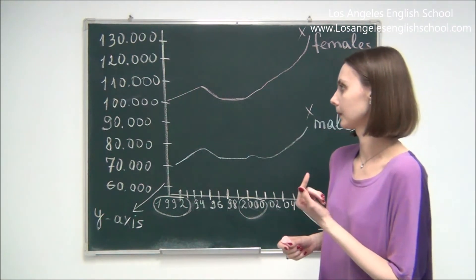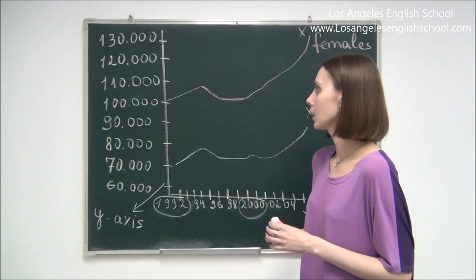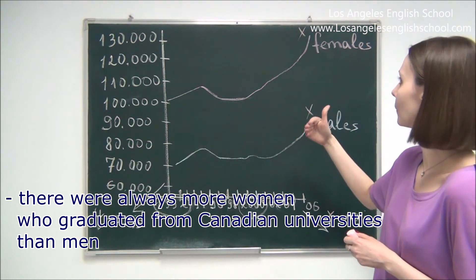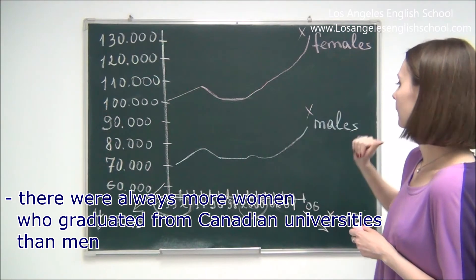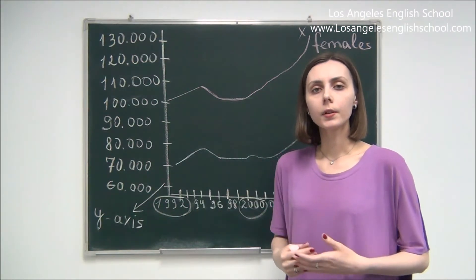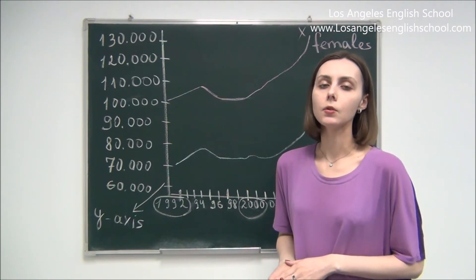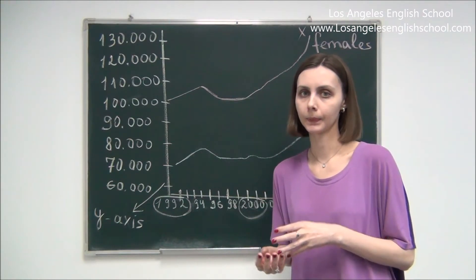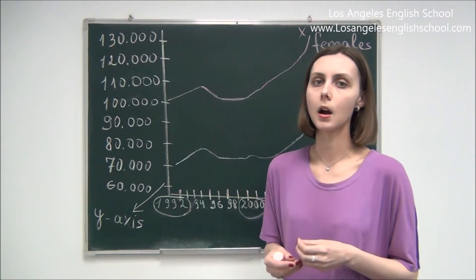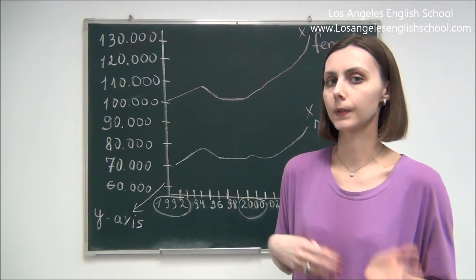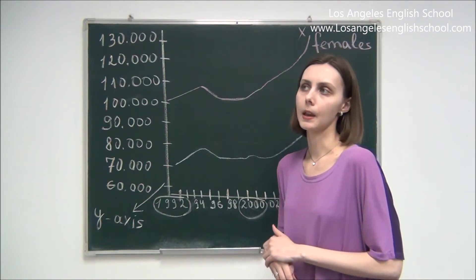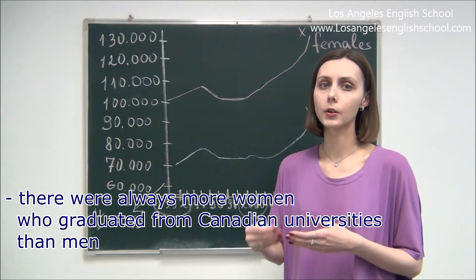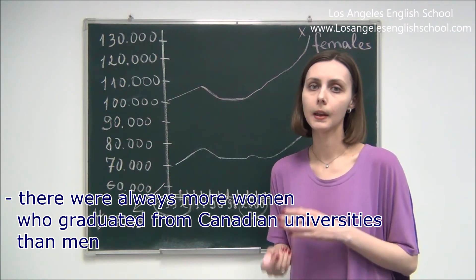The next main feature is that there were always more female graduates than male graduates. To avoid repetitions you should use synonyms and change your vocabulary. Do not keep writing 'female graduates, male graduates' repeatedly. You can say: 'There were always more women who graduated from Canadian universities than men.'